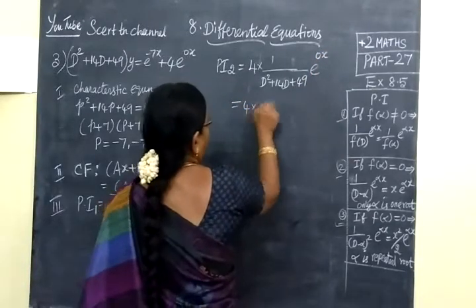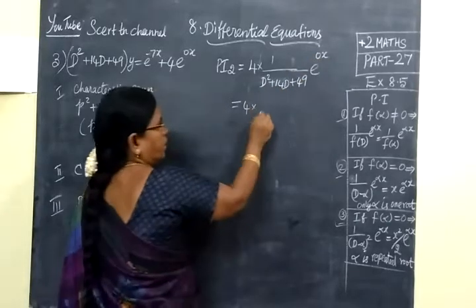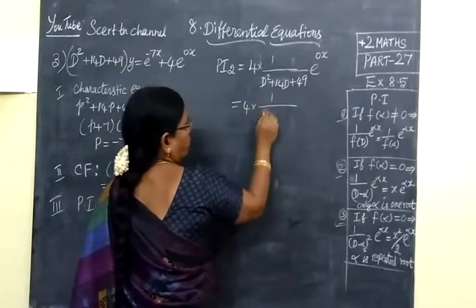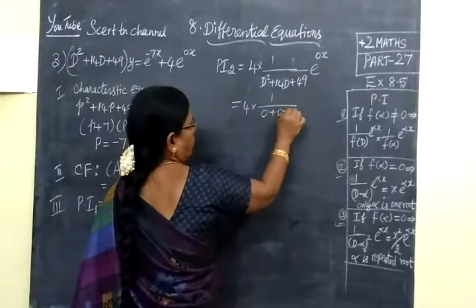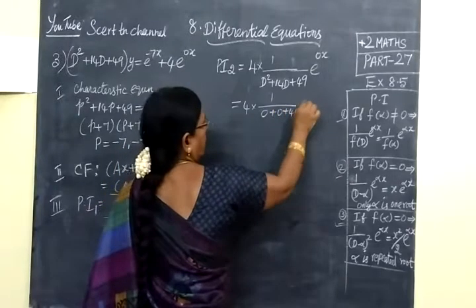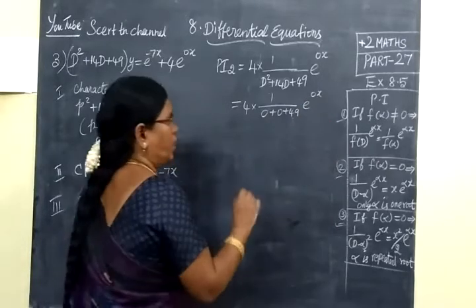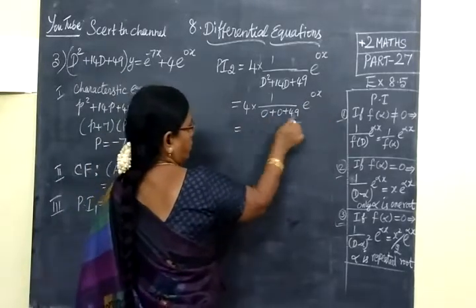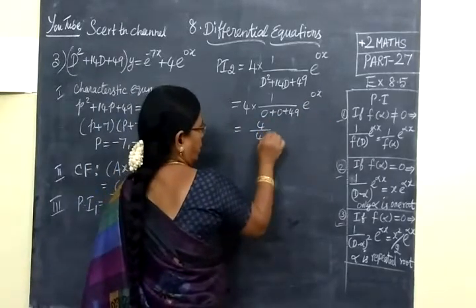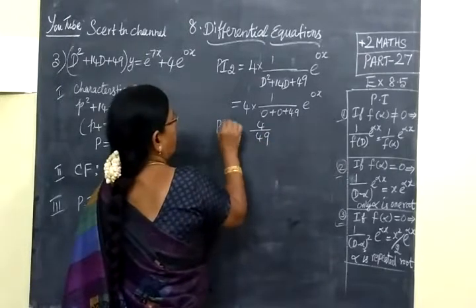This simplifies to 4/(0 + 0 + 49) times e^(0x). Since e^(0x) = 1, we get 4/49. This is PI2.